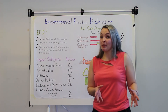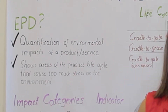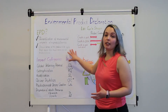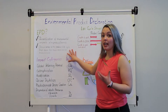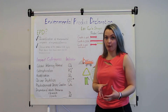What is an EPD? An EPD is a document that quantifies environmental impacts of a product or service. An important aspect of an EPD is to provide the basis for a fair comparison between products or services by their environmental performance. They are also a good indicator to show the areas of the product life cycle that cause too much stress on the environment.